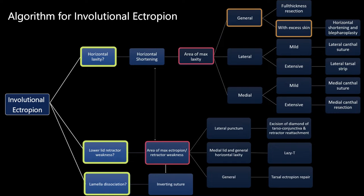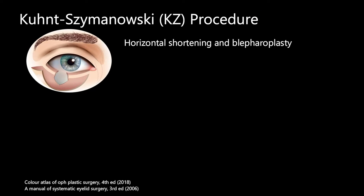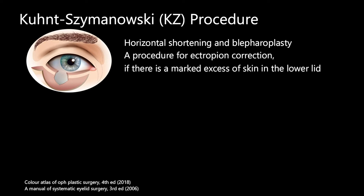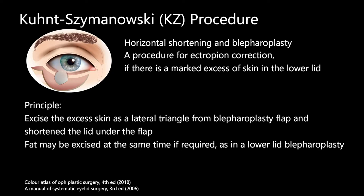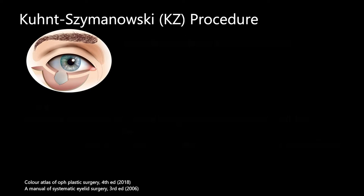In the case of horizontal laxity with a general area of laxity and excess skin, we need to consider horizontal shortening and blepharoplasty. The Kuhnt-Szymanowski procedure is essentially a combination of horizontal shortening and blepharoplasty. The principle is to excise the excess skin and shorten the lid under the flap. Fat may also be excised if required.